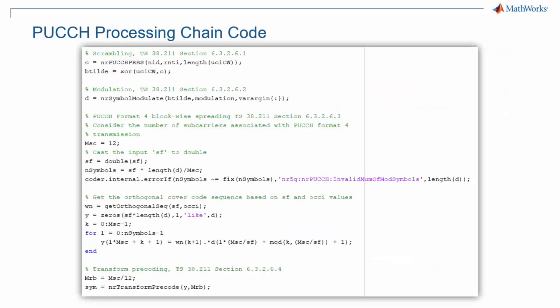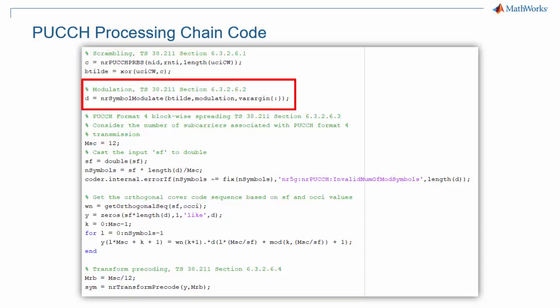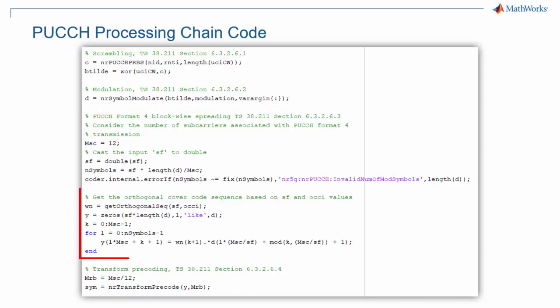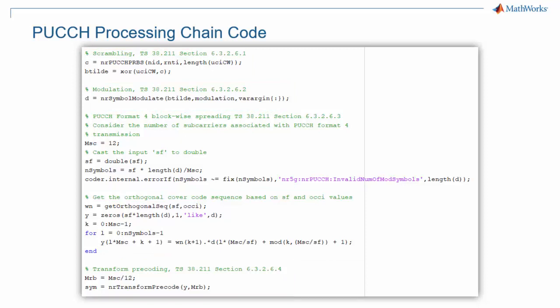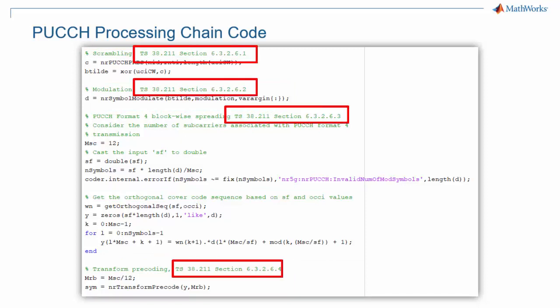Here you can see code from the MathWorks 5G toolbox that implements the PUCCH chain for format 4, the most complicated chain from the previous slide. You can recognize steps such as scrambling, modulation, spreading, and transform pre-coding. The code also provides all necessary references to 3GPP standard documents.